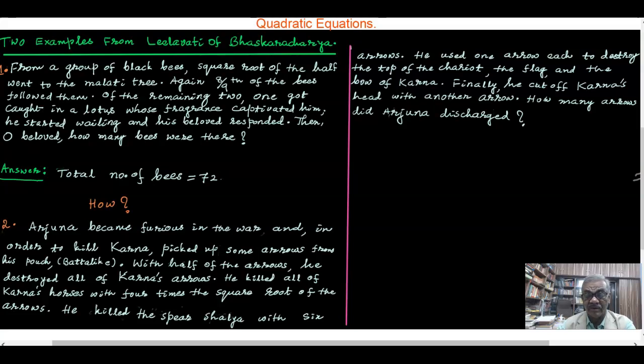Again, for this example, from this example he constructed a quadratic equation and solved it. See the beauty of these two problems. The one is about the activities of the bees and the second one which will give Arjuna's picture of war between Arjuna and Karna.